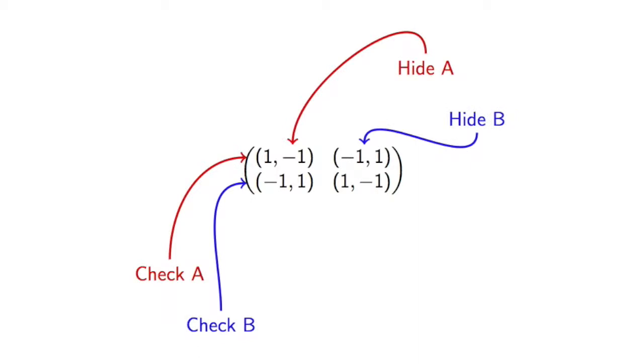So that game of hide and seek is represented there in normal form, where if Ben checks A and I hide in A, then the utility profile is (1, -1), so Ben gets 1 for finding me, I get -1 for losing.